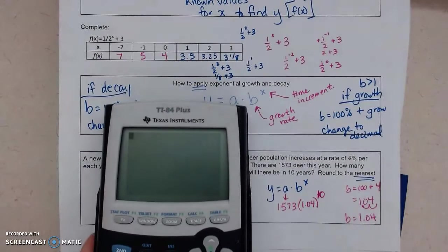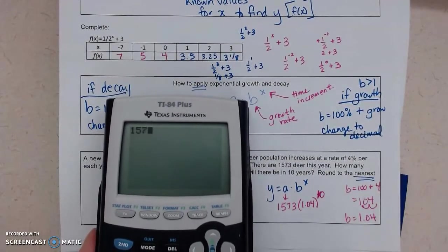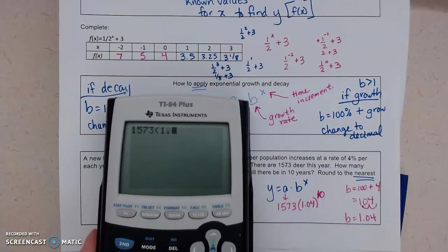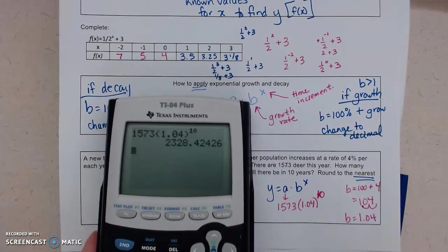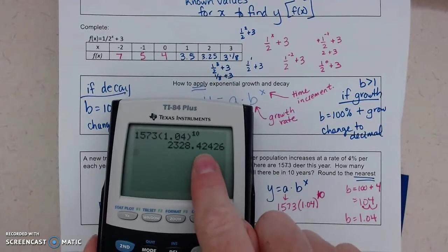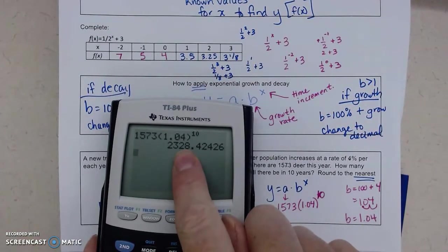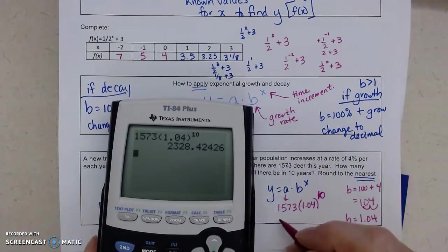Our time is 10. So I've got 1573 times 1.04 to the 10. And they want us to round to the nearest deer, so we are going to have 2,328 deer.